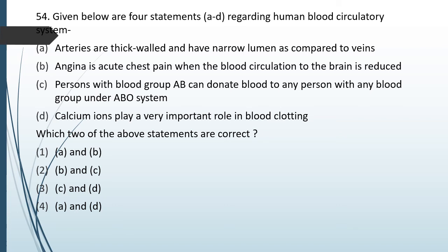Question No. 54: Given below are 4 statements regarding the human blood circulatory system. A: Arteries are thick-walled and have narrow lumen compared to veins. B: Angina is acute chest pain when blood circulation to the brain is reduced. C: A person with blood group AB can donate blood to any person under the ABO system. D: Calcium ions play a very important role in blood clotting. Which two statements are correct? The correct answer is Option 4 — statements A and D are correct. Arteries are thick-walled with narrow lumen: true. Calcium has an important role in blood clotting: true. Angina is acute chest pain, but it occurs when blood circulation to the heart is reduced, not the brain. And for Option C, blood group O is the universal donor, not AB.